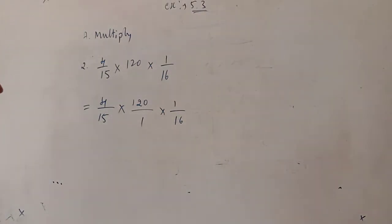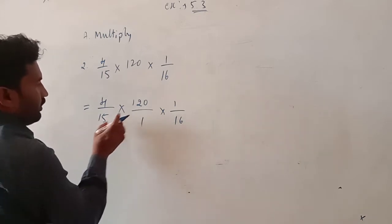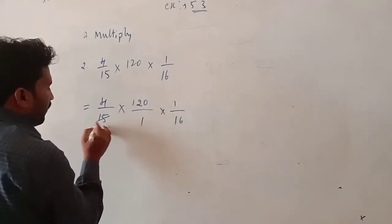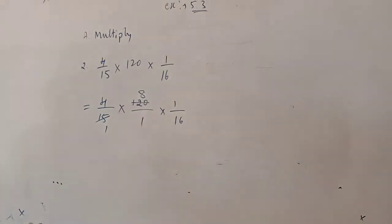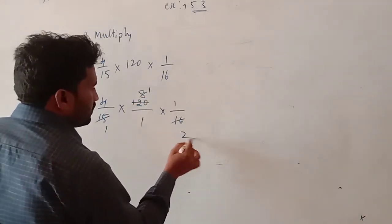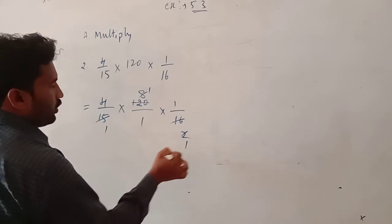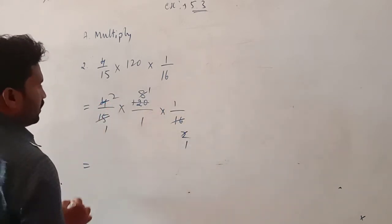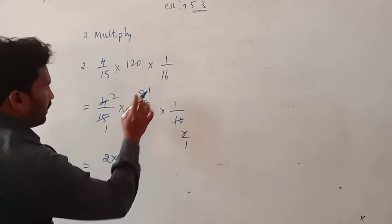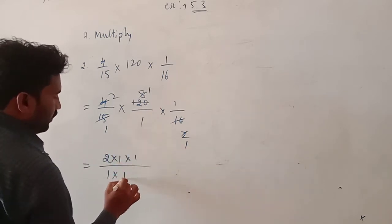Now check whether the given fractions are divided by any numbers. So numerator and denominator: 15 is dividing into the second term's numerator. 15 ones are 15. And its numerator and denominator both are dividing: 8 ones are 8, so 8 into 16, denominator 2, and numerator 4 is dividing, so 2 ones are 2, 2 into 4. So in the numerator we got: first term 2 into 1 into 1. In denominator: 1 into 1 into 1.